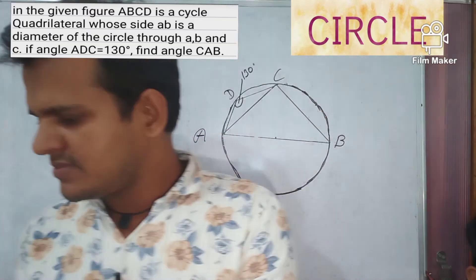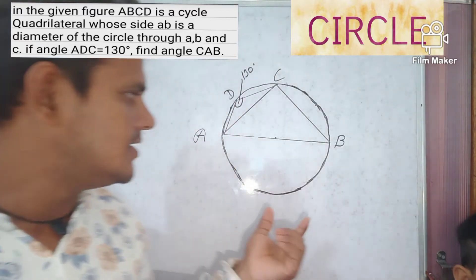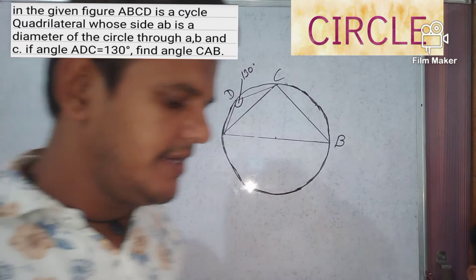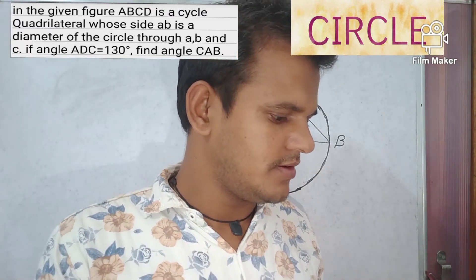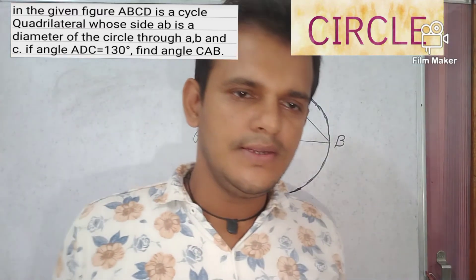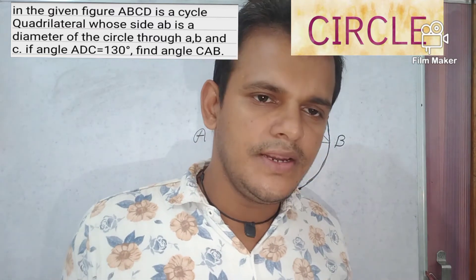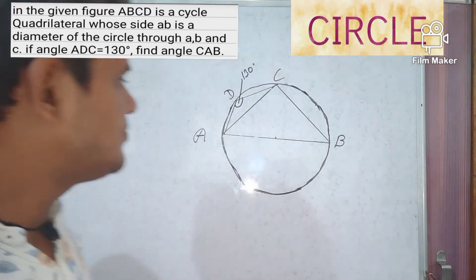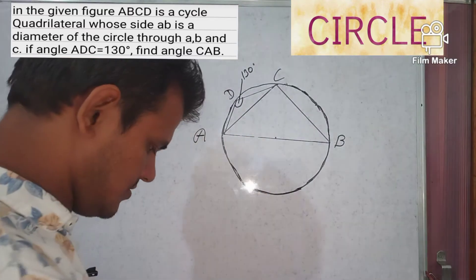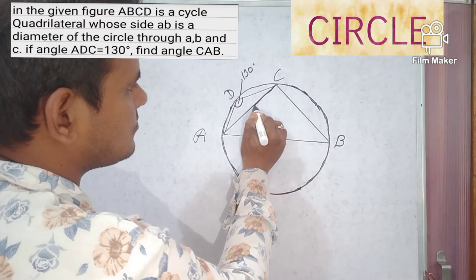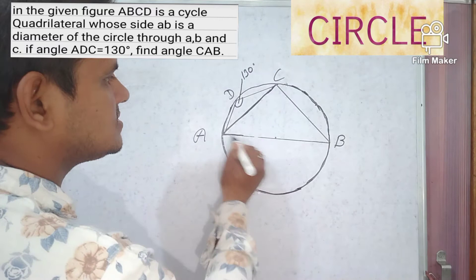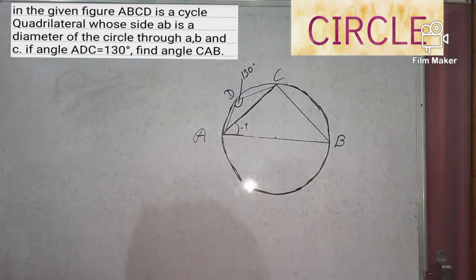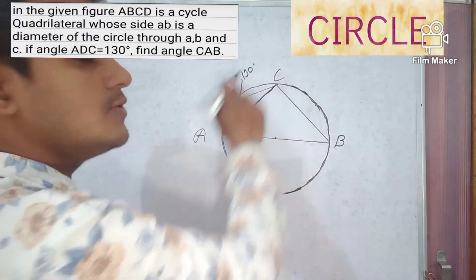Today's question: in the given figure, ABCD is a cyclic quadrilateral. Side AB is a diameter of the circle through A, B, and C. If angle ADC is equal to 130 degrees, find angle CAB. Our target is to find angle CAB — this angle is unknown. In the given figure, ADC is equal to 130 degrees.